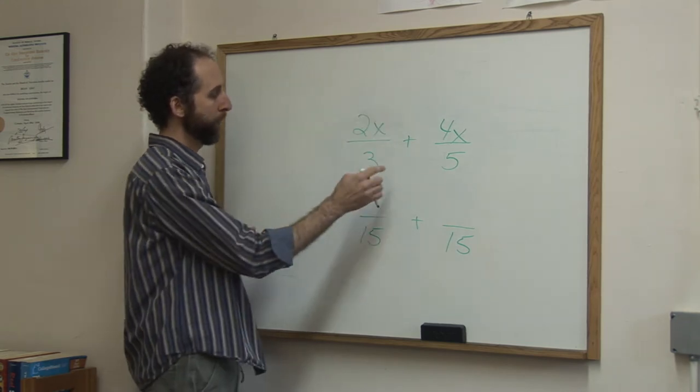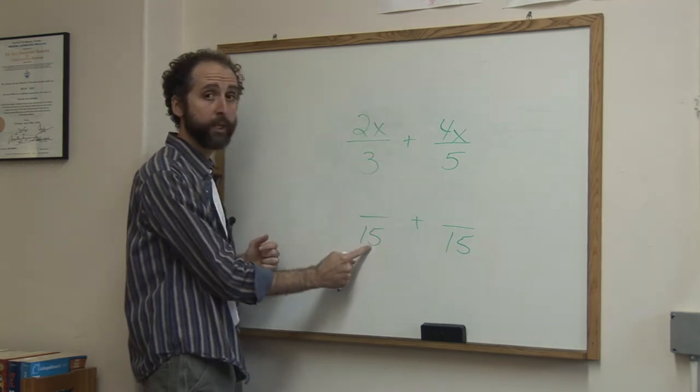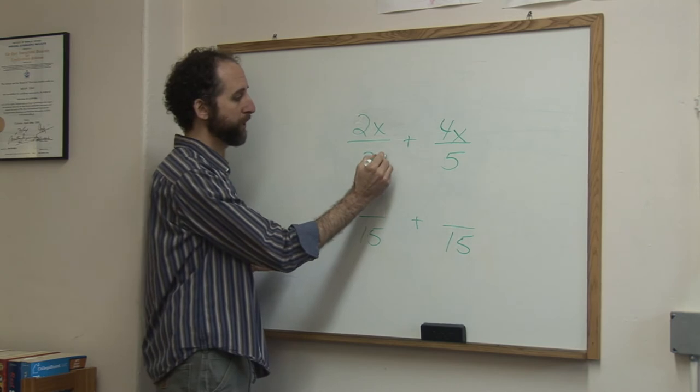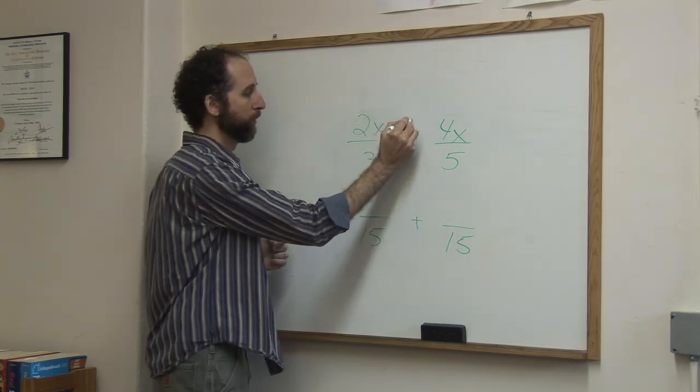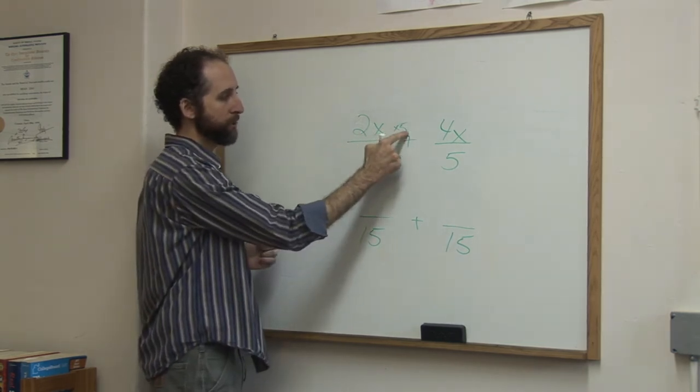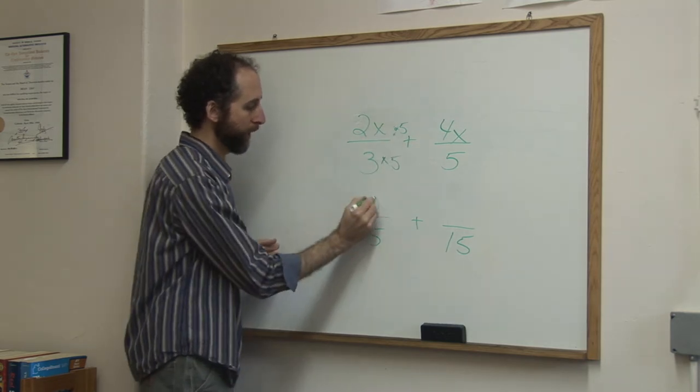It's always a good idea to copy straight down. If 3 times what is 15, the answer is 5. So we have to multiply the top by 5 as well. 2x times 5 is 10x.